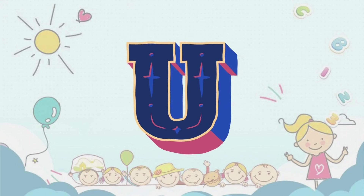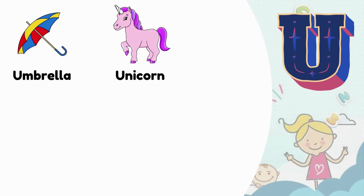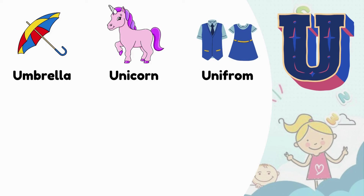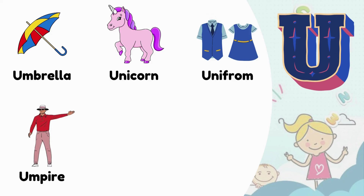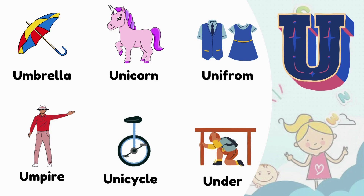U. U is for Umbrella. U is for Unicorn. U is for Uniform. U is for Umpire. U is for Unicycle. U is for Under.